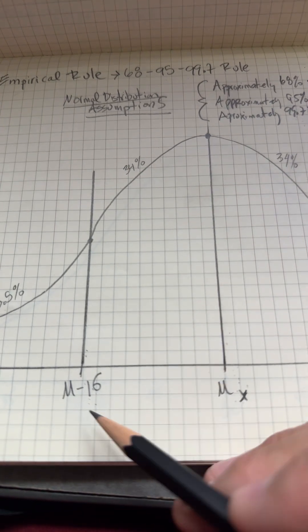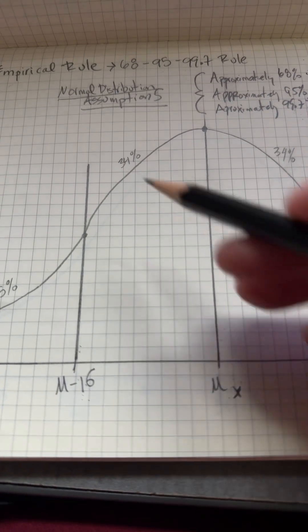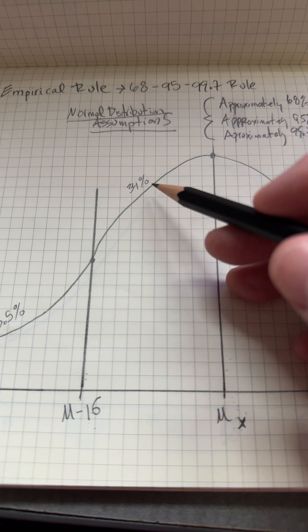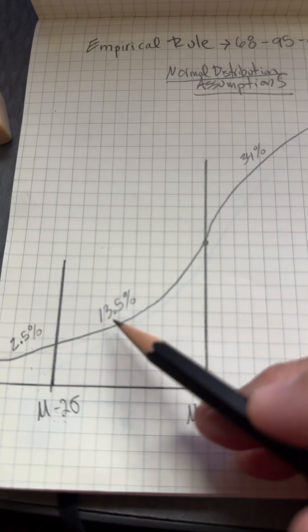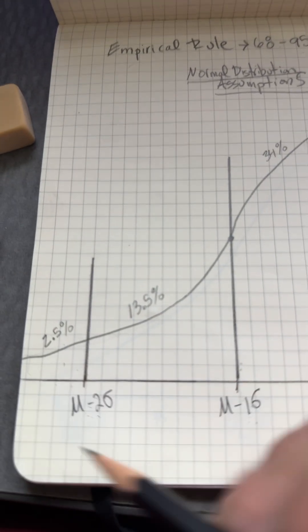You want to shade this piece right here from negative one to mu. Negative one standard deviation to mu is 34 percent. And over here is 13.5 percent and 2.5 percent.